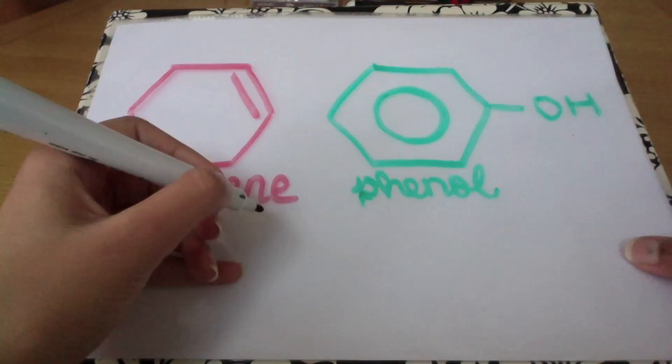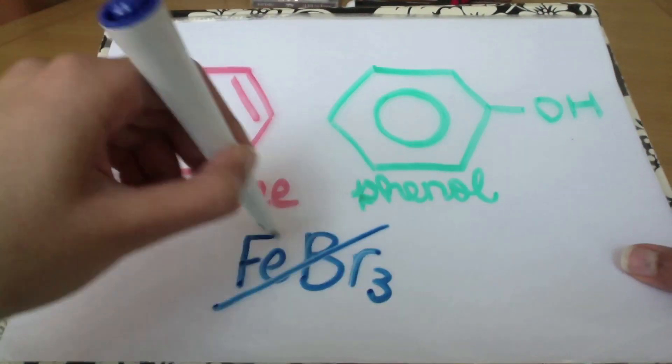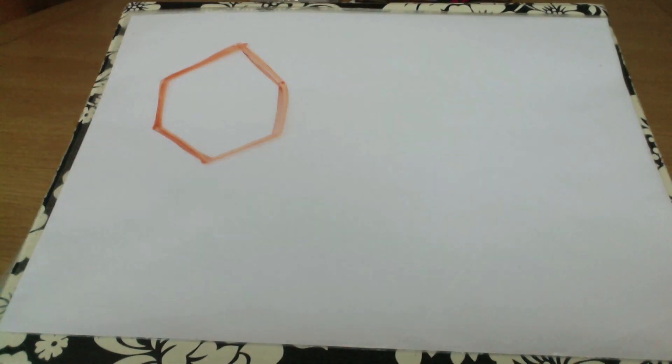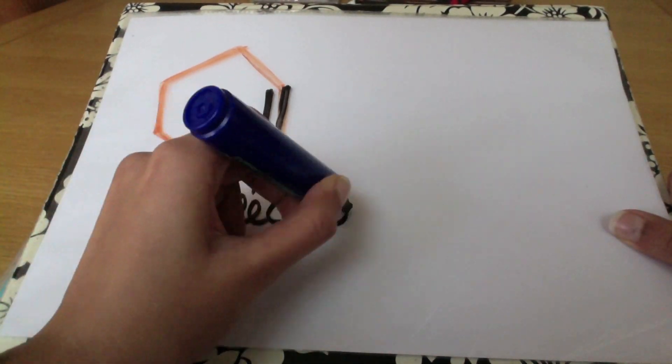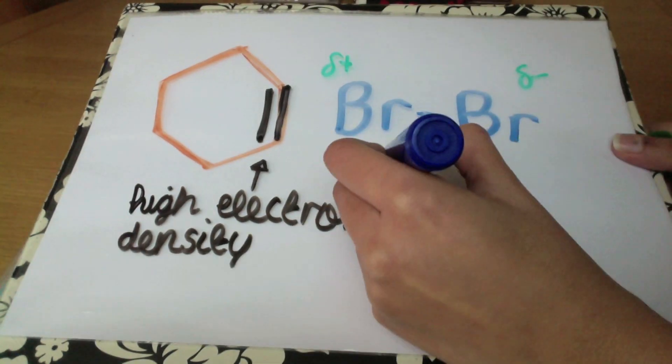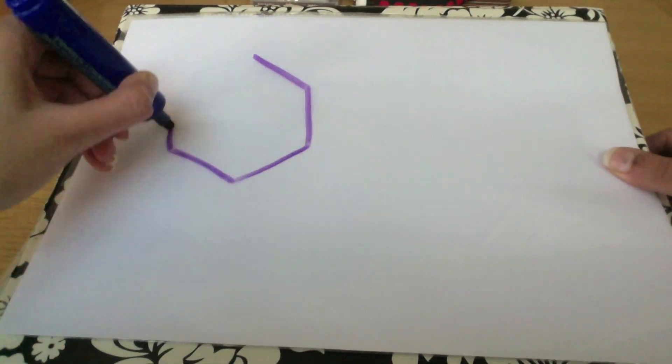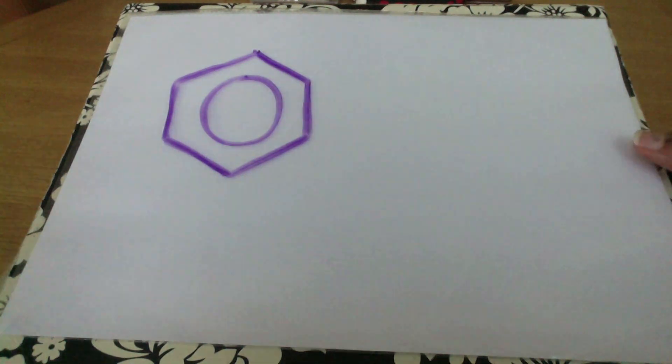Cyclohexene and phenol react more readily than benzene and don't require a catalyst to react with bromine. With cyclohexene, this is because it has a double bond, so there's an area of high electron density within that double bond. It's able to polarize the bromine molecule without the need of a catalyst.